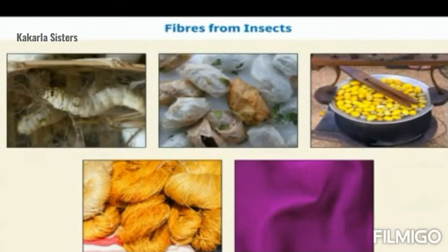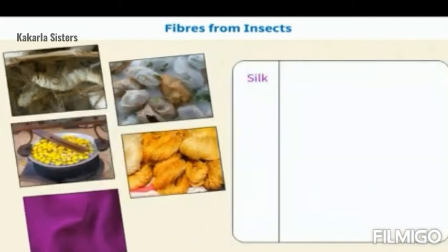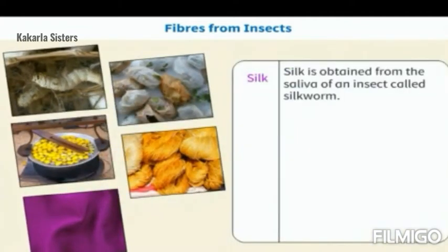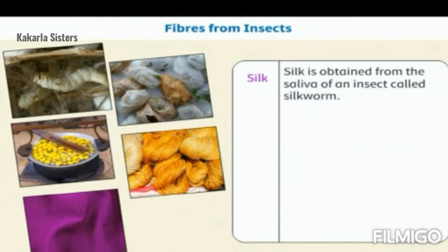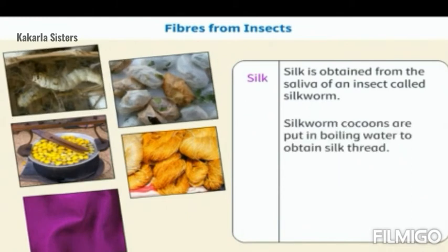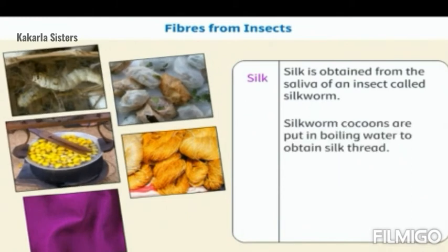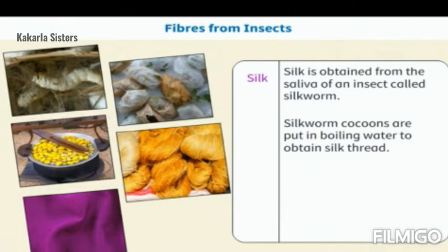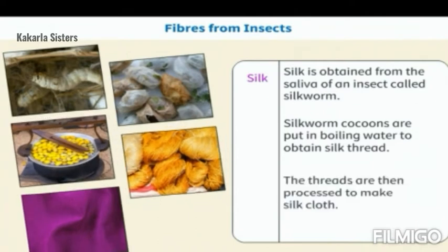Fibers from insects are in the form of silk. Silk is obtained from the saliva of an insect called silkworm. Silkworm cocoons are put in boiling water to obtain silk thread. The threads are then processed to make silk cloth.